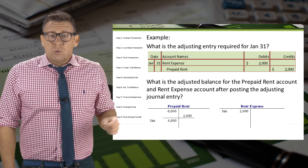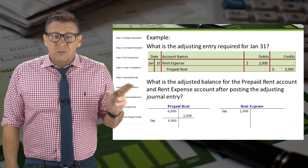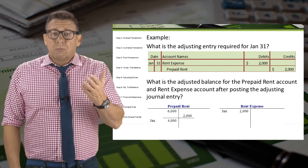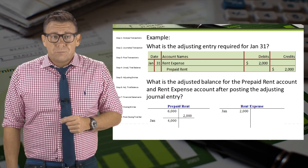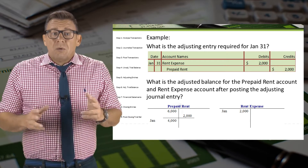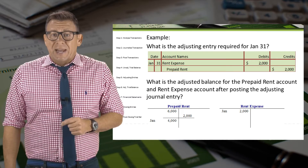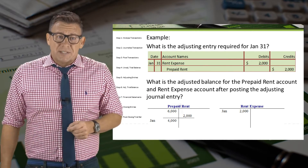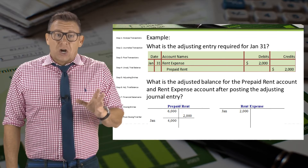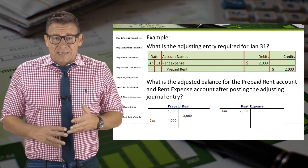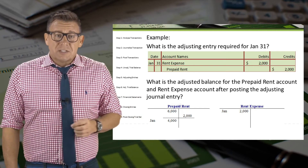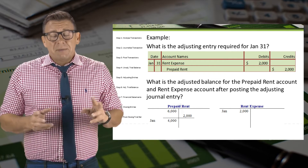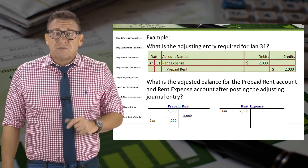The adjusting entry on January 31 is a debit to the expense account rent expense and a credit to the asset account prepaid rent for $2,000. At the end of the month, Morrissey used up $2,000 of the prepaid asset. When we use up assets, we create expense. So now the account balances are correct: the asset prepaid rent has an adjusted balance of $4,000, and the expense account rent expense has a balance of $2,000 for January.